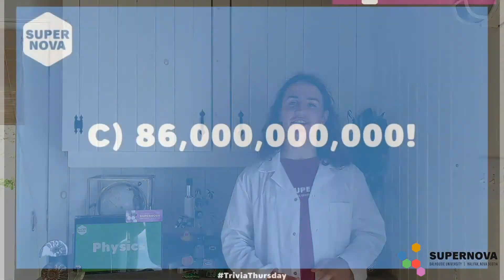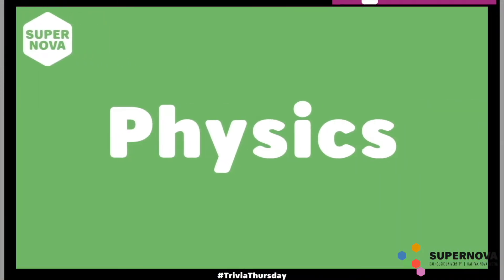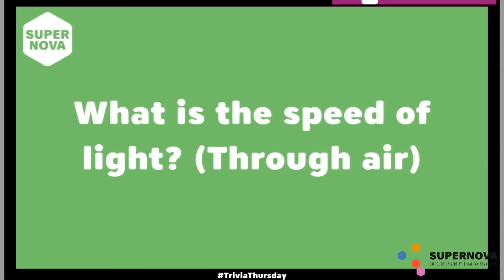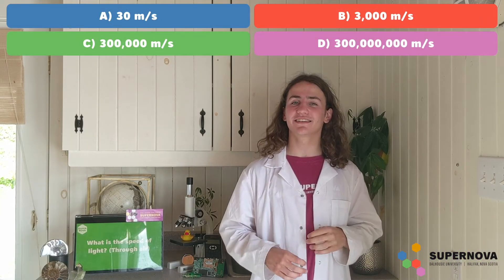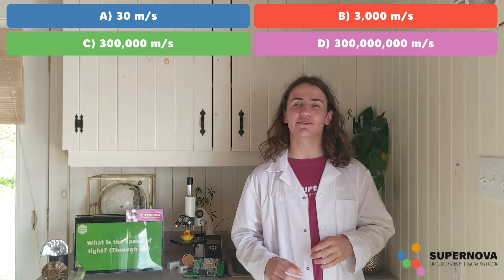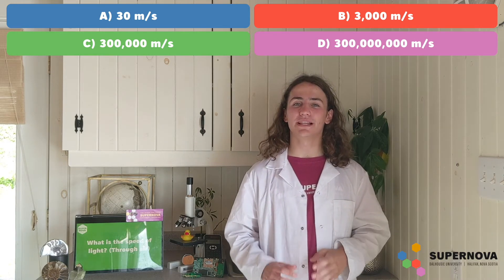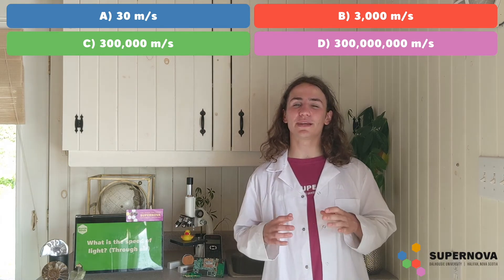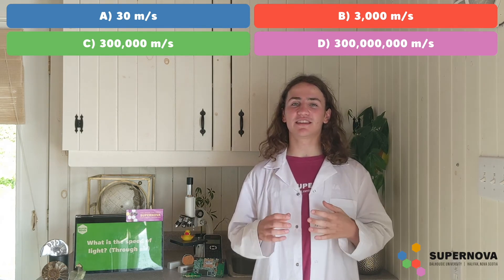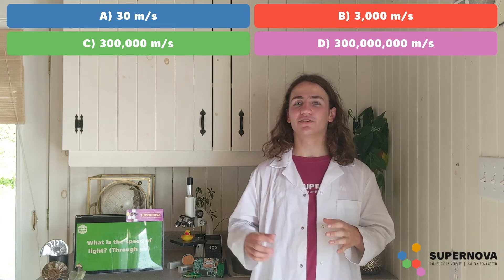We're going to move on to our third category today, which is physics. Physics is the type of science that deals with how things move and behave. And one thing that can move is light. So our physics question says: what is the speed of light through air? Do you think the answer is 30 meters per second, 3,000 meters per second, 300,000 meters per second, or 300 million meters per second? I'll give you a moment to pick your answer and think about which of these numbers a wave of light could travel in only one second.